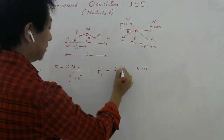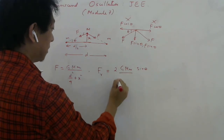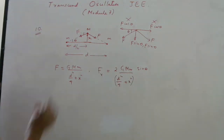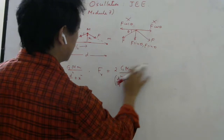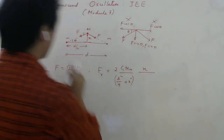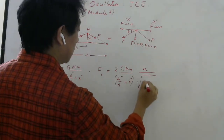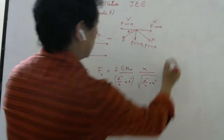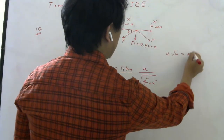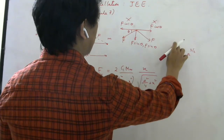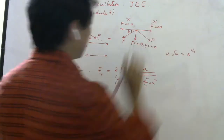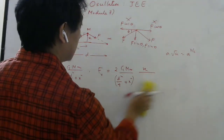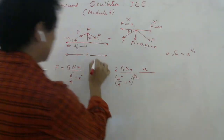Now F = G·m·M / (d²/4 + x²), and sin theta = x / √(d²/4 + x²). Multiplying these together: the denominator becomes (d²/4 + x²)^(3/2), because a quantity divided by √a times a equals a^(3/2). So the restoring force is 2G·m·M·x / (d²/4 + x²)^(3/2), directed opposite to displacement.